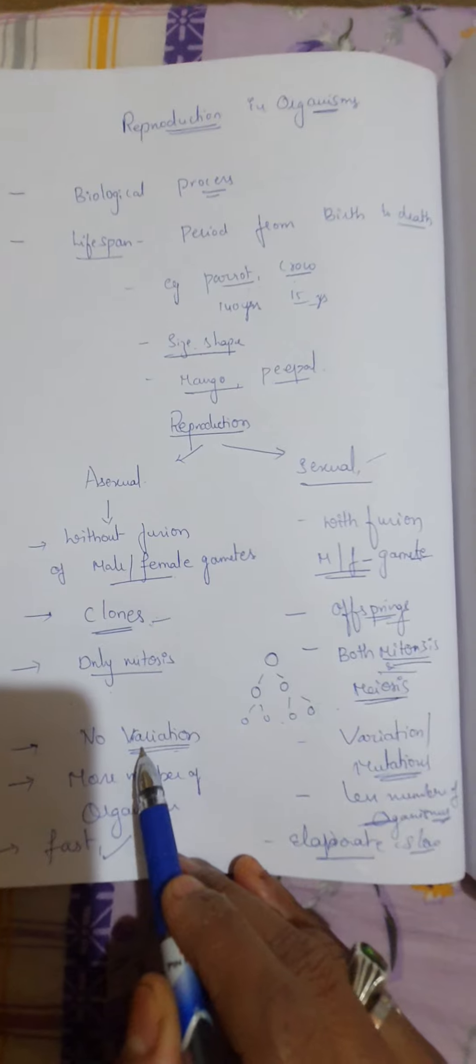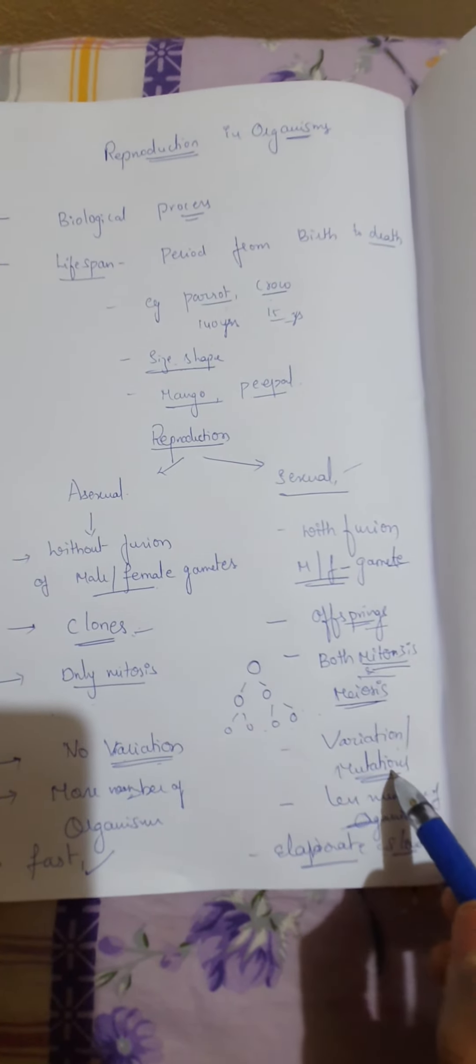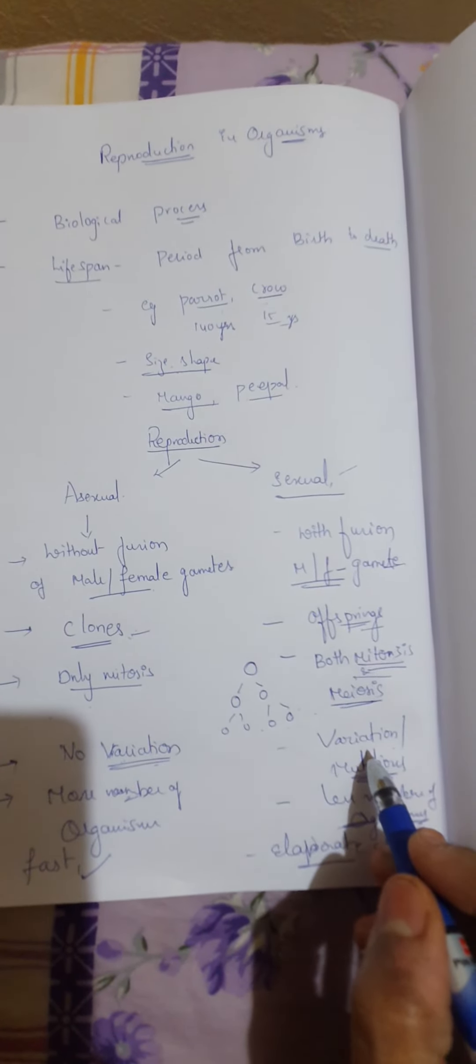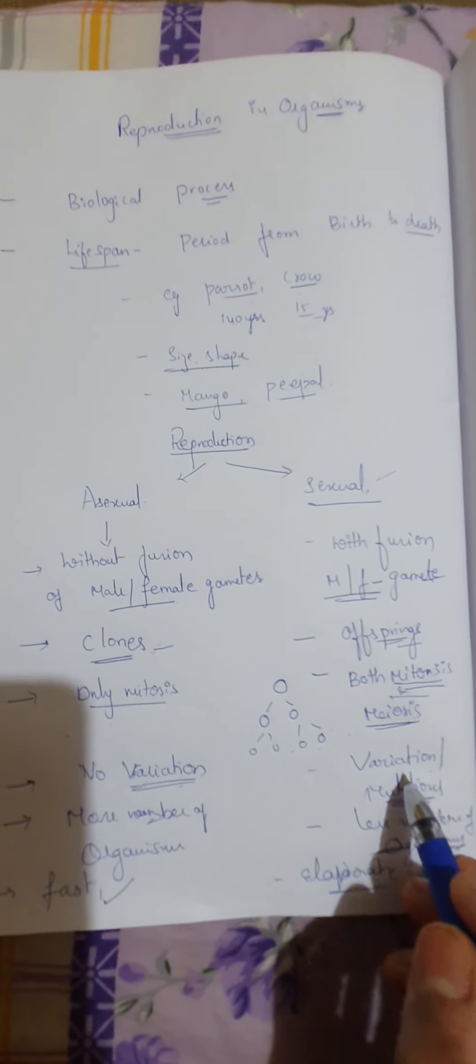Now, here no variations will be. And here variations and mutations. What is meant by variation? It is changes. And mutations means sudden heritable changes also take place.